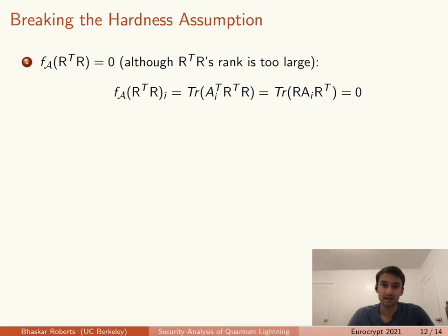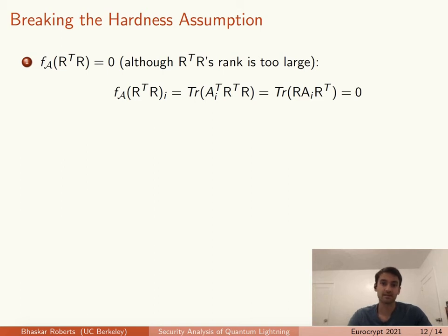Now with the SIS hash function, it's typically not collision resistant when we know the trapdoor, because we can take any pre-image, add the trapdoor vector to it, and get a second pre-image of the same hash value. However, this attack doesn't immediately work in this construction, because the rank of R^transpose R is larger than D, so R^transpose R is technically not in the domain of F_A. That means if we took a pre-image and added R^transpose R to it, we wouldn't necessarily get a second pre-image in the domain. However, we can get around this problem.